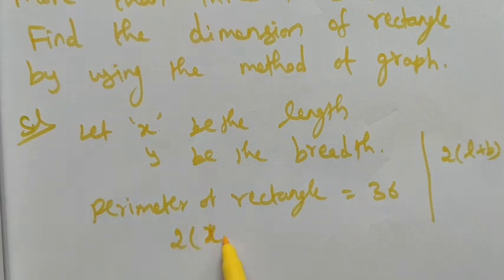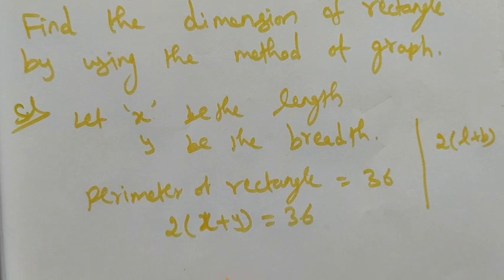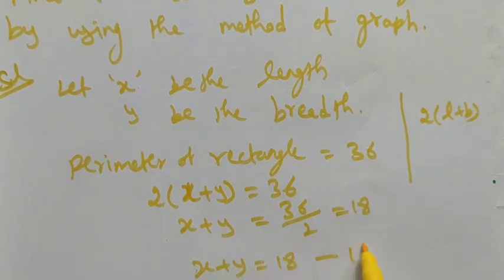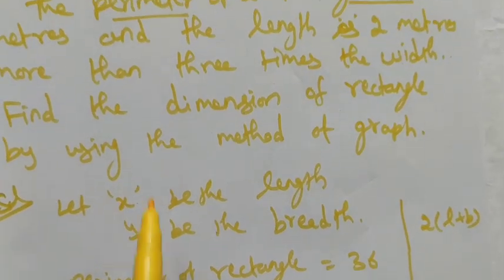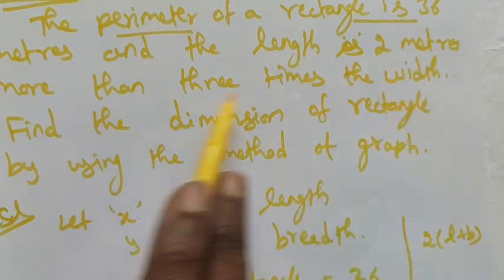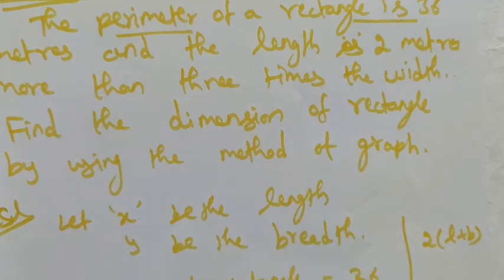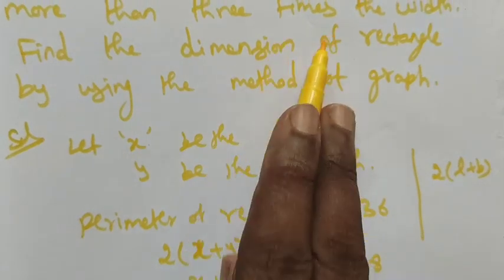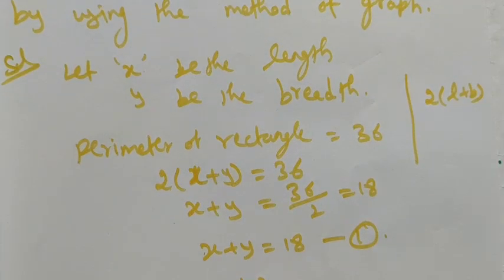So 2 into (x + y) = 36, which gives x + y = 18. That is the first equation. The second equation: the length is 2 meters more than 3 times the width, so x = 3y + 2. This is the second equation.